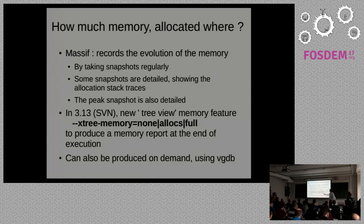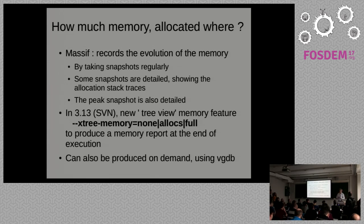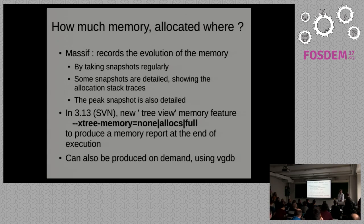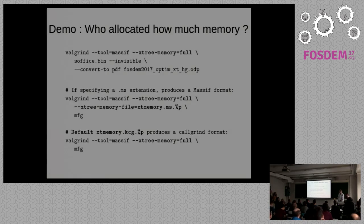This snapshot is produced at the end of execution, but you can also produce an xtree snapshot on demand using vgdb. vgdb is the relay application between GDB and Valgrind — when you want to debug your application while it's running under Valgrind, you can do that using GDB. vgdb can also be used in standalone mode to send commands to your application running under Valgrind.